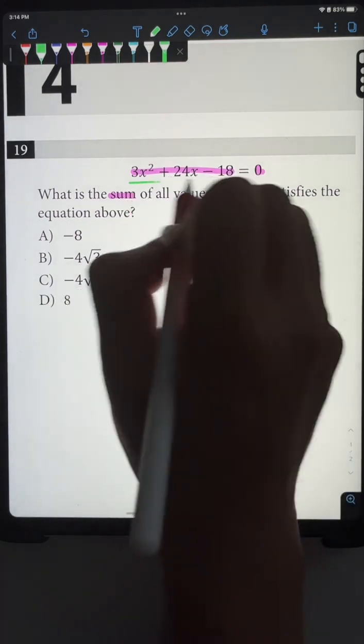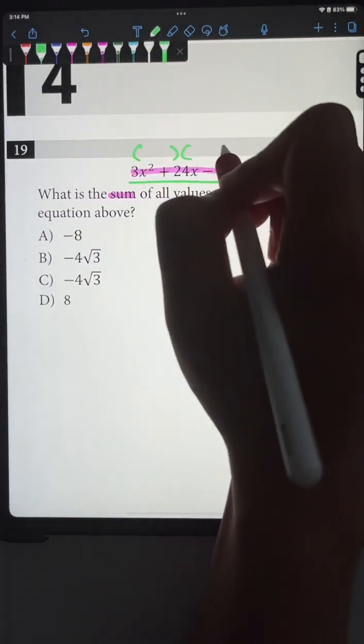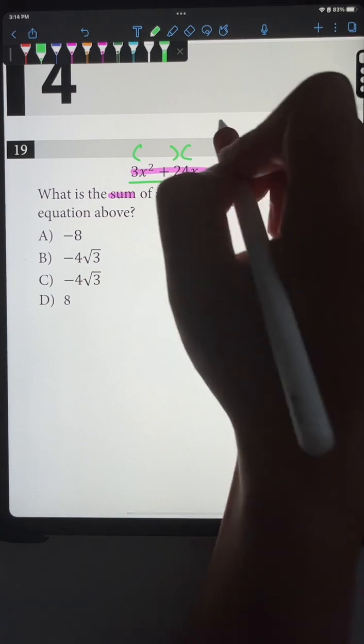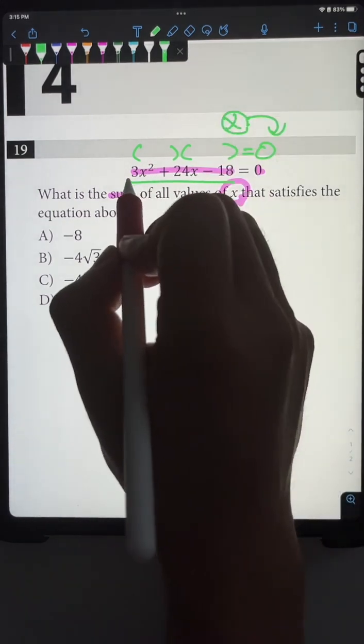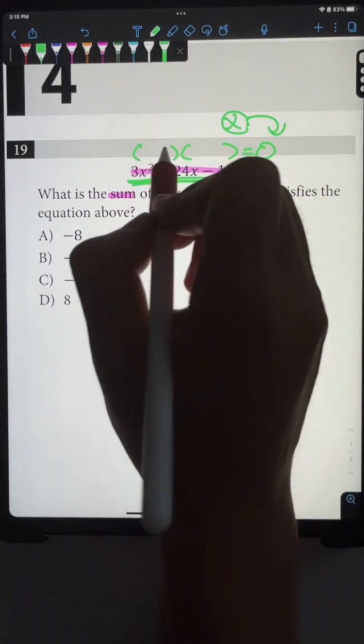Most people know that for a quadratic function, you just need to factor out the equation in order to find the value of x. Most students know that far. However, the problem here is that this equation right here is not going to be factorable.